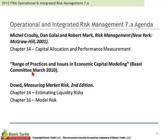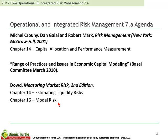We start with the study guide and four readings, which reappear from last year in the operational risk topic, including Crowey on capital allocation and performance measurement — this is largely about RAROC, risk-adjusted return on capital — a paper on the ranges of practices and issues in economic capital modeling, which is really more of a qualitative or conceptual checklist. Then two chapters from Dowd's text on measuring market risk, including a chapter on liquidity risks, primarily about liquidity-adjusted VAR or LVAR. And then a chapter on model risk — it's an old chapter, more like a conceptual or qualitative checklist as well.